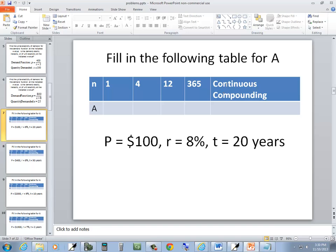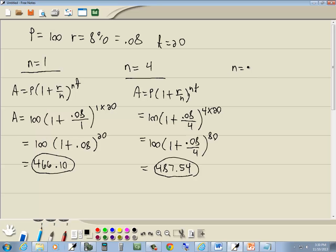And then we've got n is equal to 12. Again, it doesn't say continuous. We're going to use this formula. A is equal to P times 1 plus R over n to the nt power. Plug in what we're given. P is 100. 1 plus R, which is 0.08, divided by n, which is 12, raised to the nt power, which is 12 times t, which is 20.